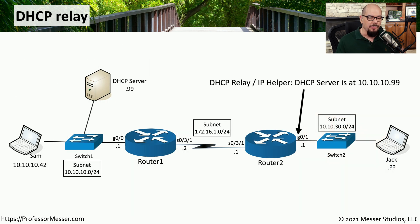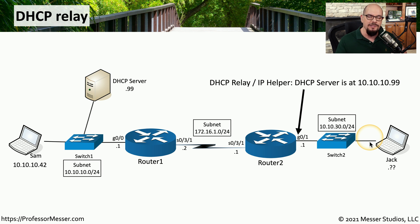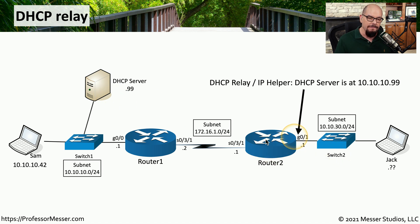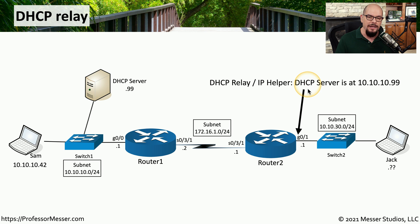Let's look at the same network configuration, but this time look at Jack's workstation. When Jack turns on his computer, he needs an IP address configured. But there are no local DHCP servers on Jack's subnet, so simply sending a broadcast will have no response because those messages will never make it to the DHCP server on a different IP subnet. Instead, we're going to configure this router with a DHCP relay — also referred to as an IP helper — telling the router that if it ever receives a message for DHCP, to transfer that message to the DHCP server at 10.10.10.99, which is on the other broadcast domain.